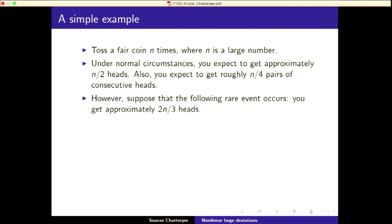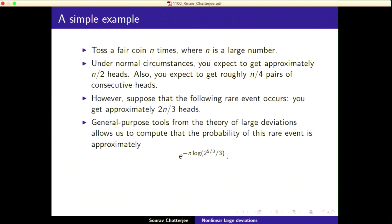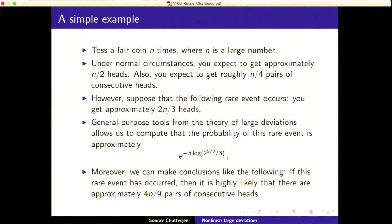Suppose the following rare event occurs: instead of n/2 heads, you get 2n/3 heads. So if you're tossing a coin a thousand times, instead of 500 heads you get 666 or more. There are general-purpose tools to compute these probabilities approximately — asymptotically it's like e to the minus n times some number. Moreover, given this rare event, the number of consecutive head pairs changes from n/4 to likely 4n/9. So other quantities also change conditionally.